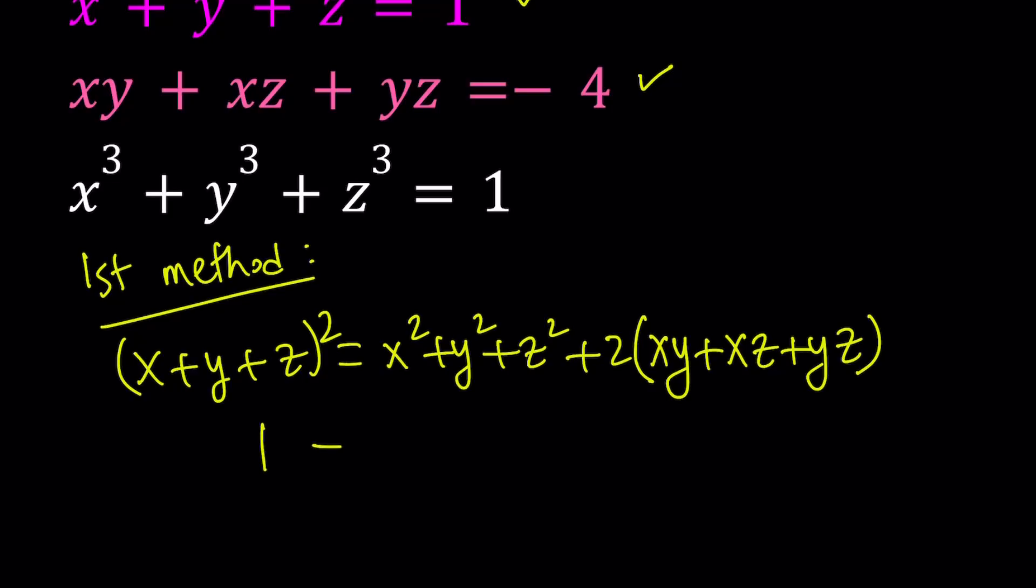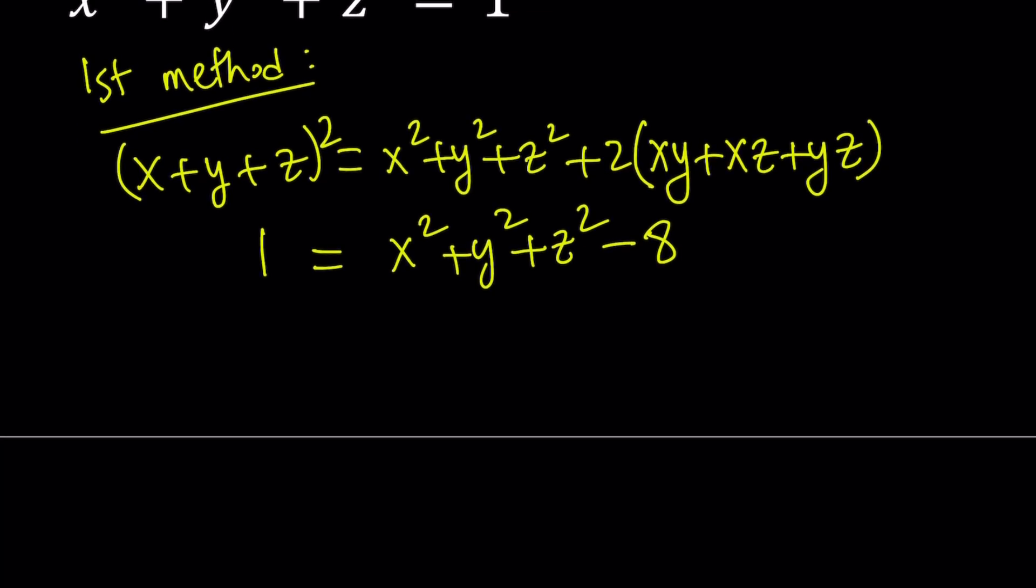So it's going to be 1 equals x squared plus y squared plus z squared plus 2 times negative 4, which is going to be negative 8. So from here, if you isolate x squared plus y squared plus z squared, you're going to get 9. Awesome.